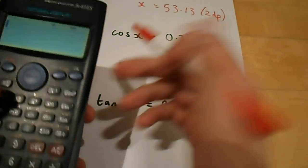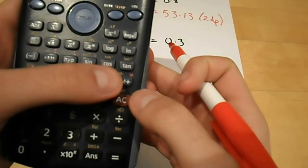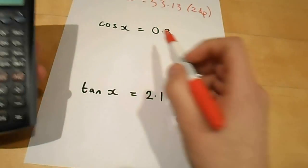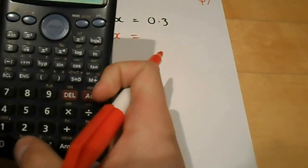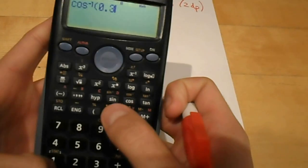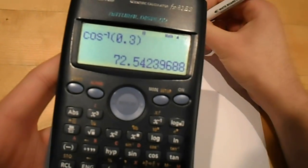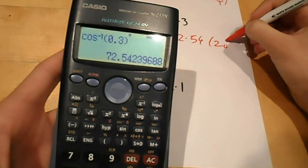Here, I've got cos of x, so I need to find the inverse of cos. Again, I press shift to get to the yellow buttons, and it's above the cos, so I just press shift cos. Again, it's going to be of 0.3. And that gives me 72.54 to two decimal places.